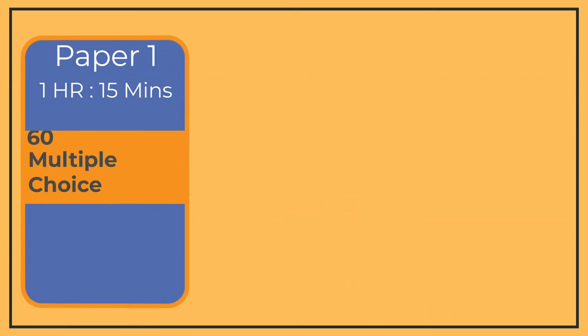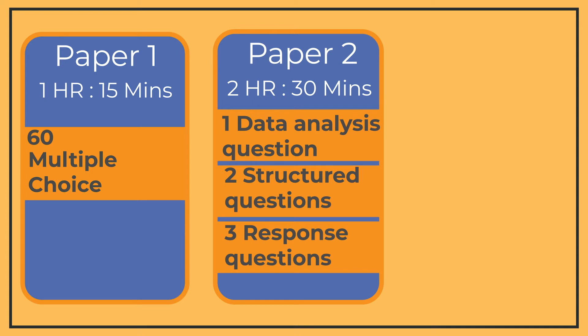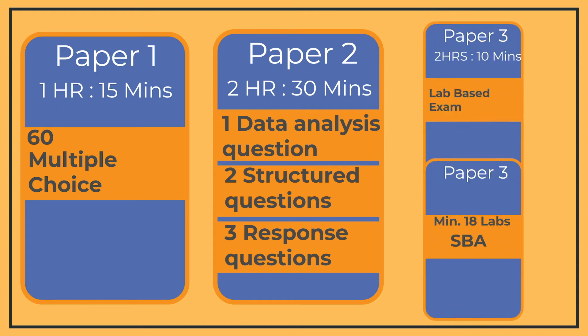If you register outside of your institution, you may also be able to sit Paper 3 as a private candidate rather than through the school-based assessment. So to summarize: Paper 1 is 60 multiple choice questions; Paper 2 has three sections — data analysis, structured, and extended response — for a maximum of 100 marks; and Paper 3 is the practical paper, done either in school or as a private candidate. Thanks for watching!